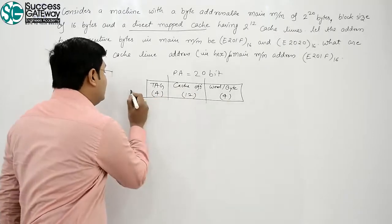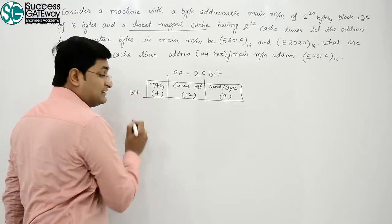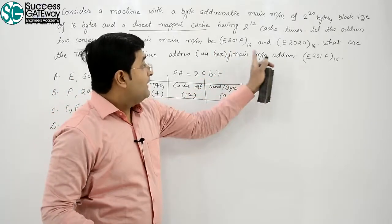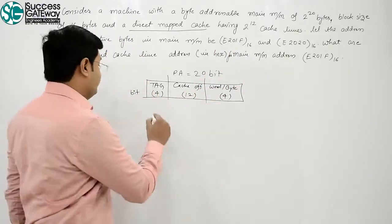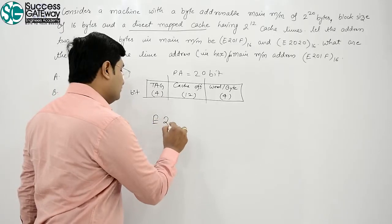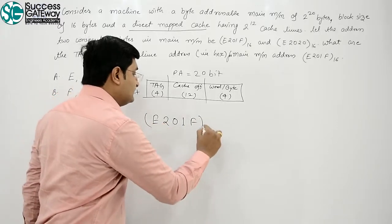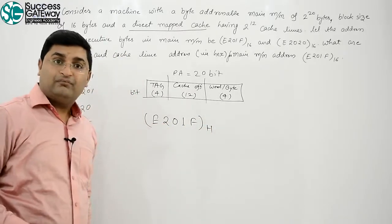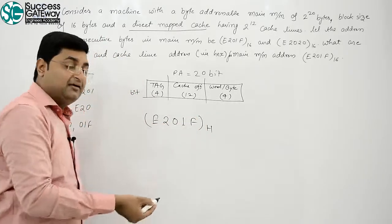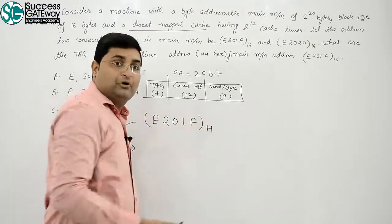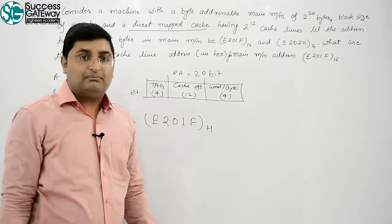Now, that is all in bits. Bats samaj mahi aari hai. Now, aap sunna. Main memory address is E201F. This is in hexadecimal. Jab aap is a binary me convert karenge, you will gain 20 digit binary number.